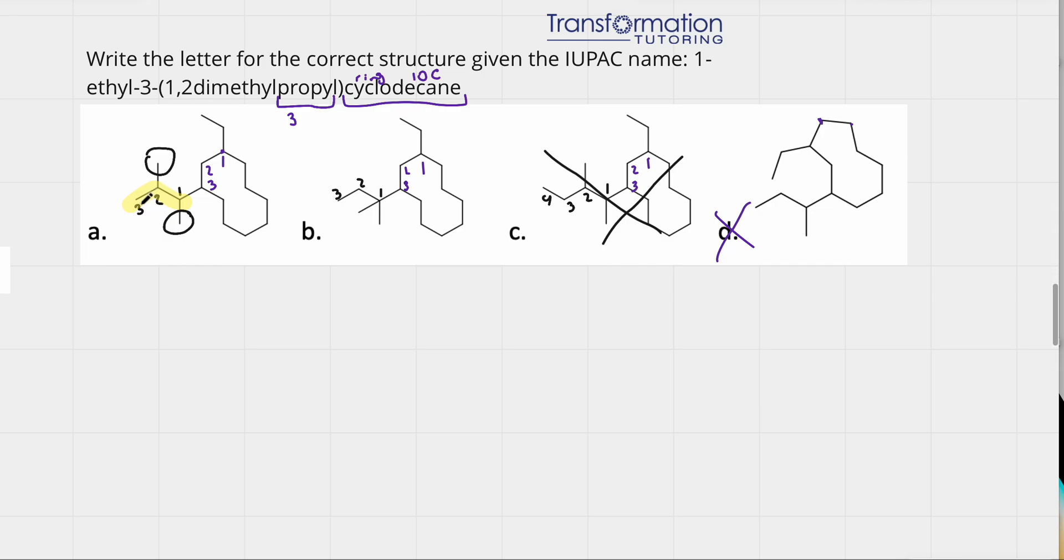And this chain is 3-carbon, so propyl. So this would be 1,2-dimethylpropyl. And 3 identifies where the substituent is attached to. It's attached to carbon number 3 on the ring.